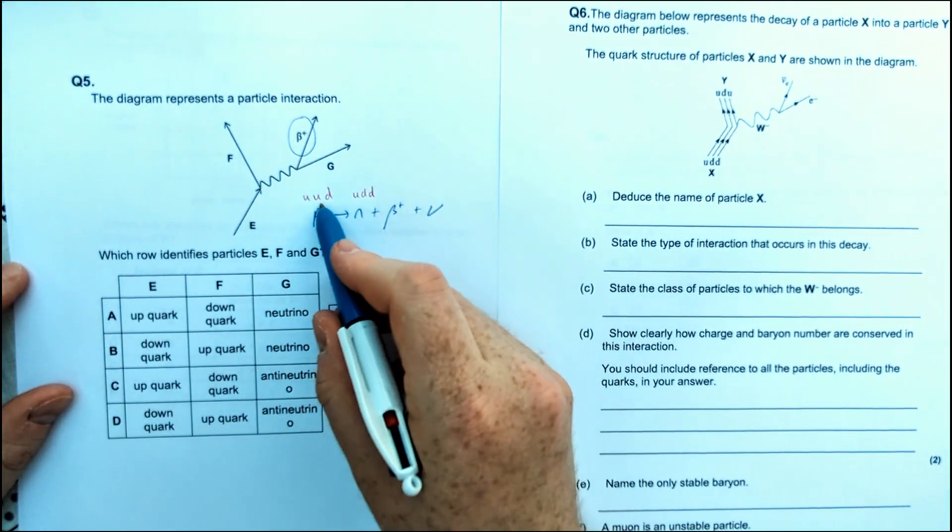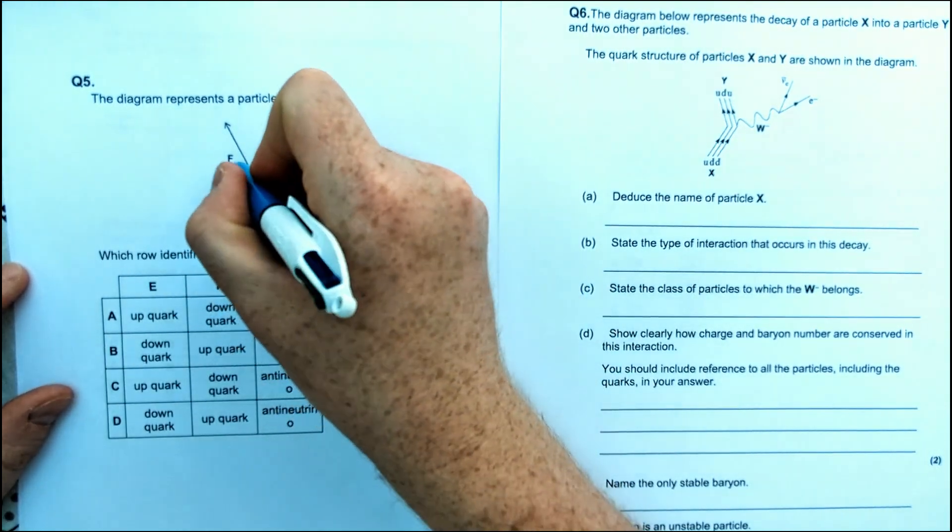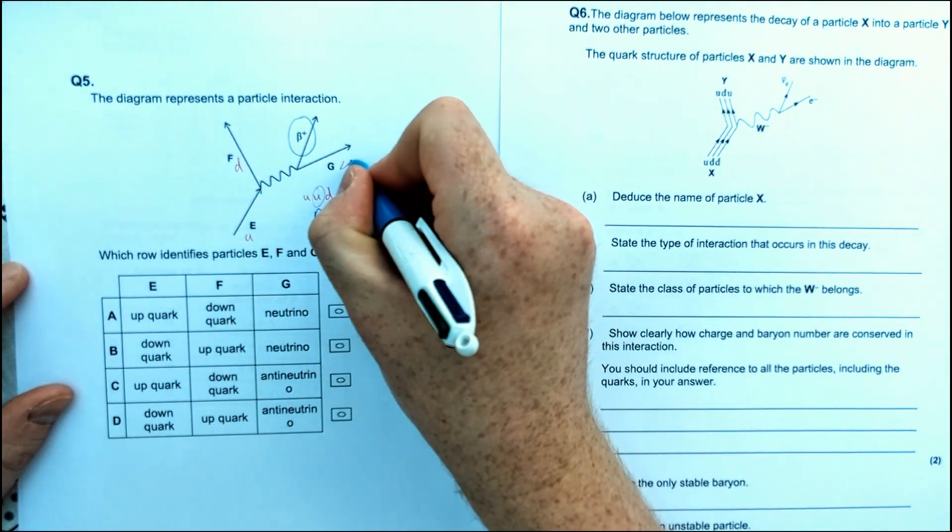So therefore, we are going to have basically E has to be this quark here, changing into D, because the other two stay the same. So we've got up into down, makes a positron, plus, as we said before, a neutrino.